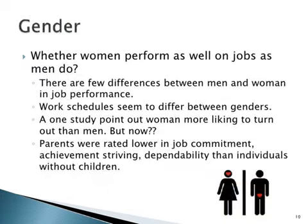The second biographical characteristic is gender. Whether women perform as well on jobs as men is a key question. There are few significant differences between men and women in job performance. Work schedule preferences seem to differ between genders. One study points out that women are more likely to turn out than men. Parents were rated lower in job commitment, achievement drive, and dependability than individuals without children.